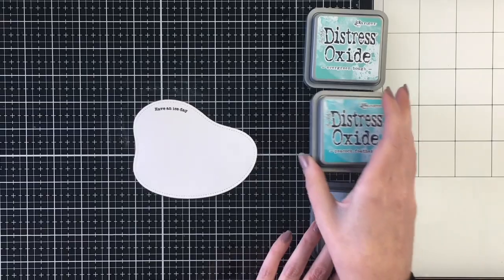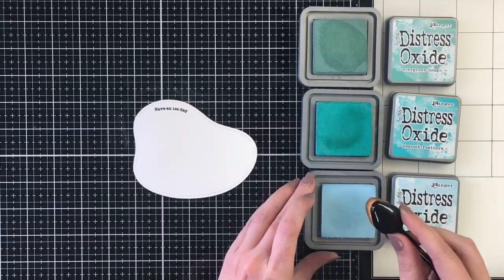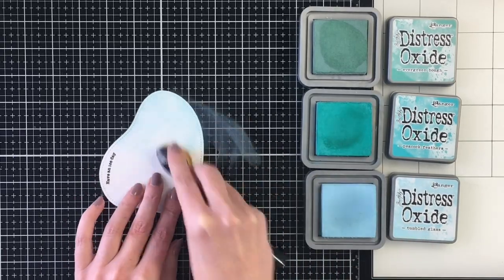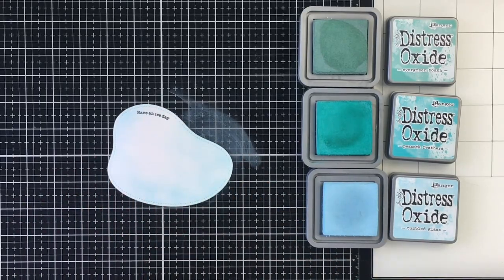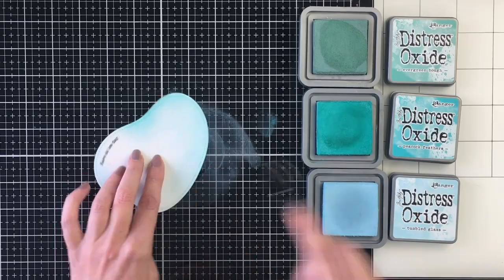And then I'm going to bring in my distressed oxides in evergreen bough, peacock feathers, and tumbled glass. The evergreen bough has a green hint to it. And so that's going to play really well with the colors that I use to color our little polar bear's scarf and mittens.